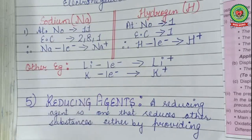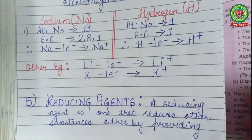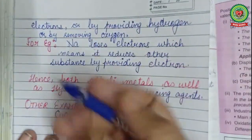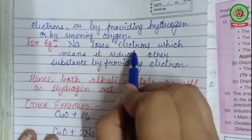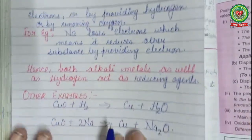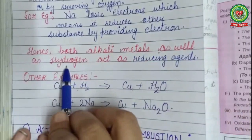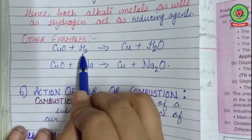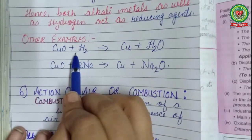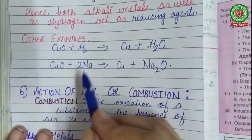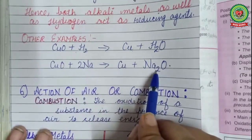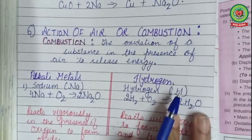The fifth similarity is reducing agents. Reducing agents are substances that reduce other substances by providing electrons, providing hydrogen, or removing oxygen. Sodium loses an electron, thereby reducing other substances by providing that electron. For example, copper oxide reacts with hydrogen — hydrogen acts as a reducing agent by removing oxygen, forming copper and water. Similarly, sodium reduces copper oxide, changing it to copper and forming sodium oxide.